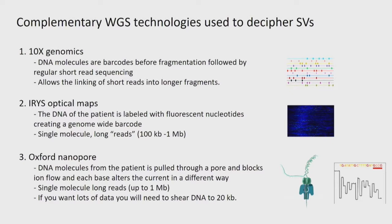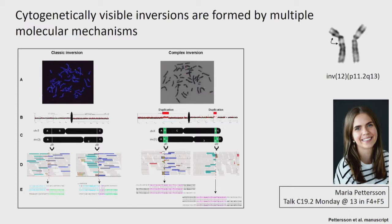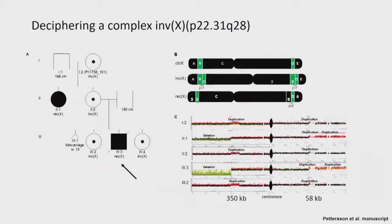One study — to be presented in more detail tomorrow by Maria — is on cytogenetically visible inversions. Interestingly, these are gross chromosomal rearrangements generally considered balanced. But when we sequence them, we find cases that are truly balanced with breakpoints in unique sequence, while others have a more complex pattern involving duplications as well.